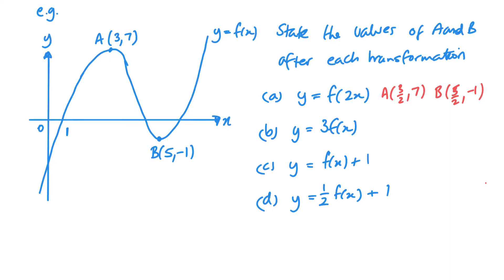For part b we've got 3 times f of x. So we're going to multiply our y values by 3. And nothing happens to our x values.